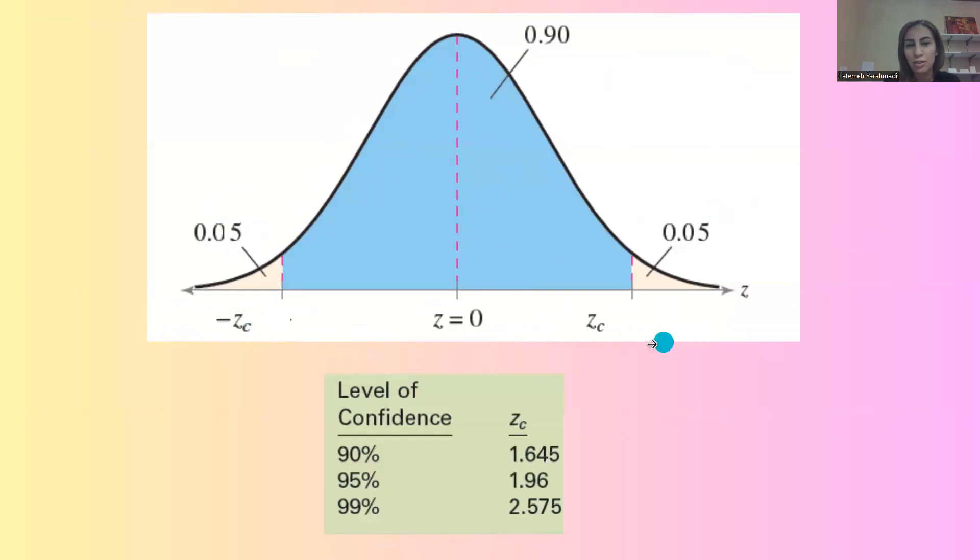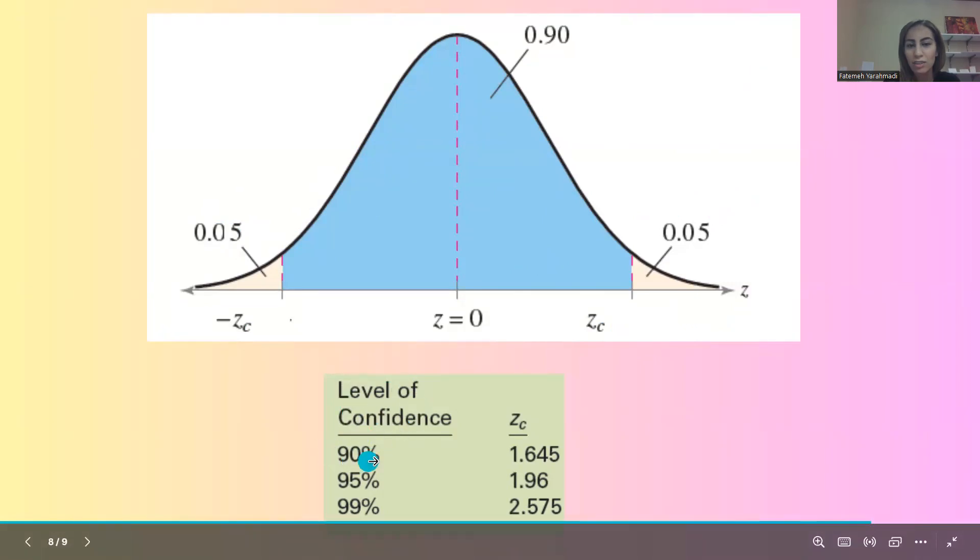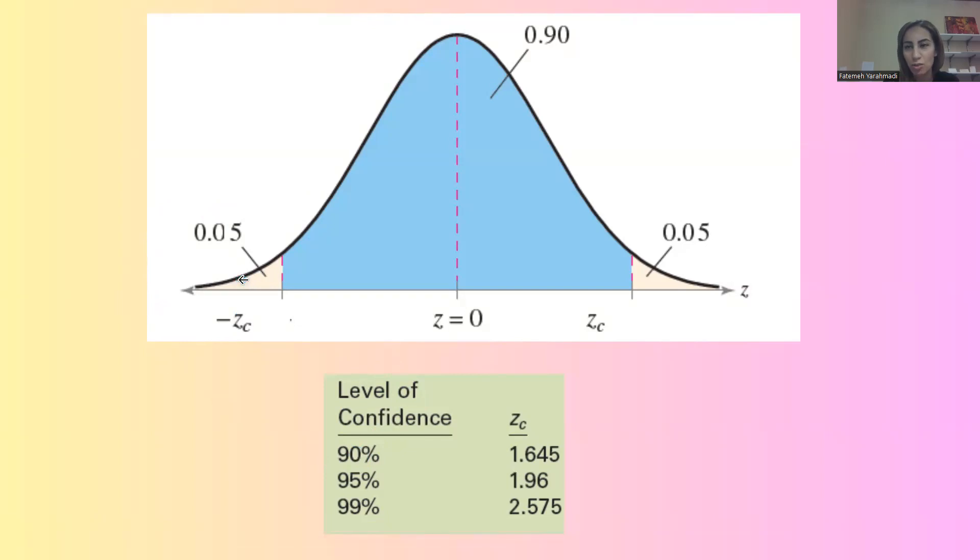To find the critical value, Z sub C, you're going to use inverse norm. When you have a level of confidence which is 90%, the area to the left is 5%.